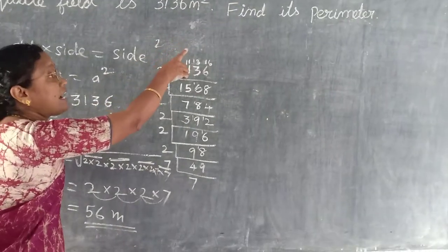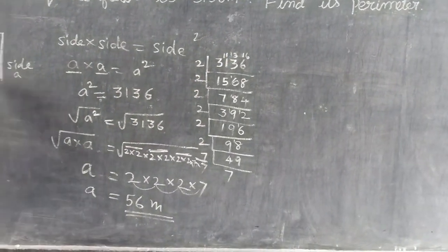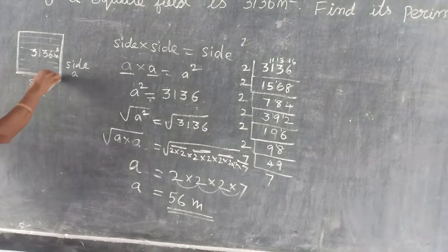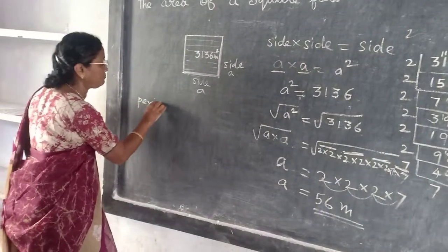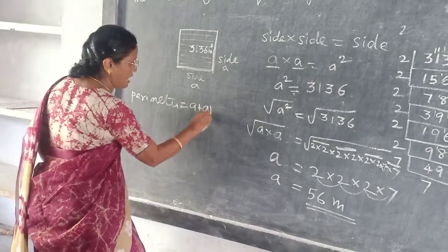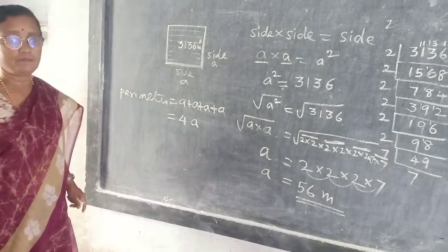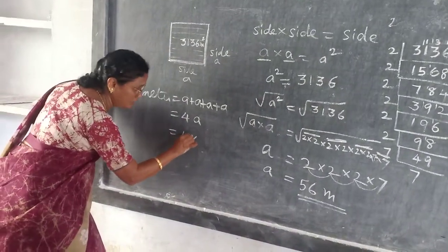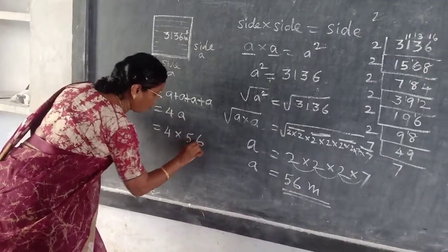But what are they asking? Find its perimeter. Perimeter is the total of all sides — circumference, going around from your starting point. That means perimeter is A plus A plus A plus A, which is nothing but four A. In the place of A you want to substitute fifty-six.